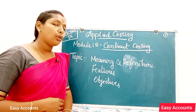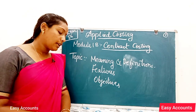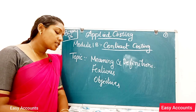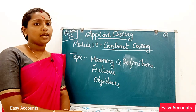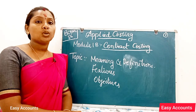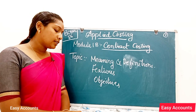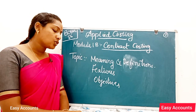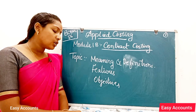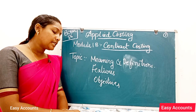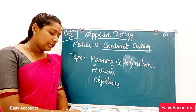The main purpose of cost accounting is the control of cost. In contract costing, the cost at each stage of work has to be assessed to know whether the actual cost agrees with the estimated cost.